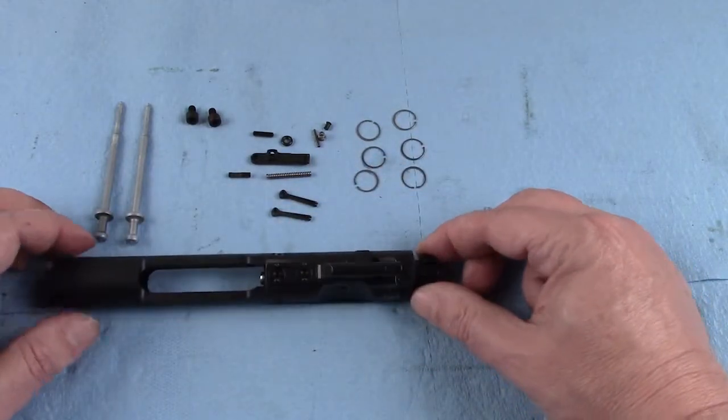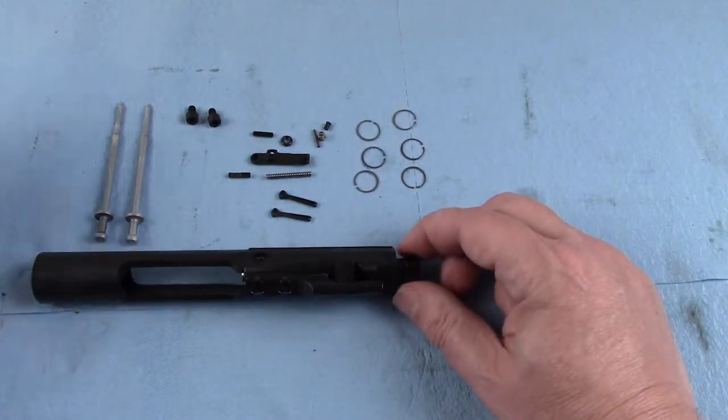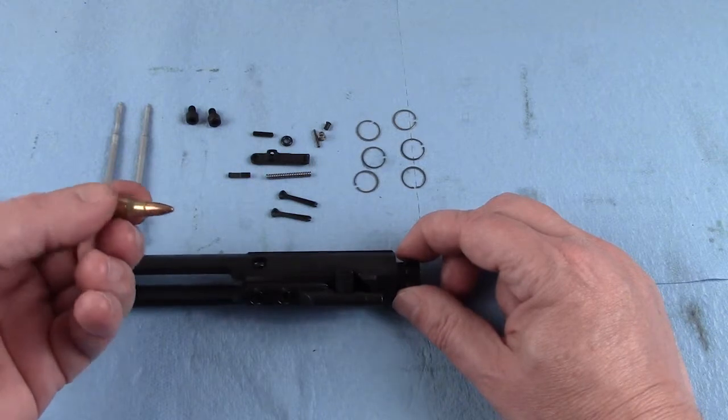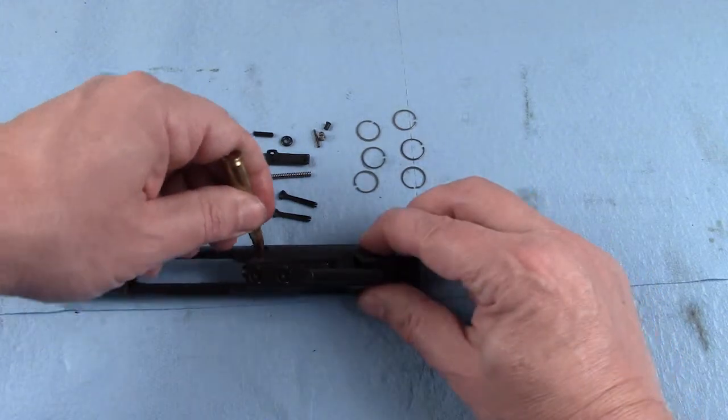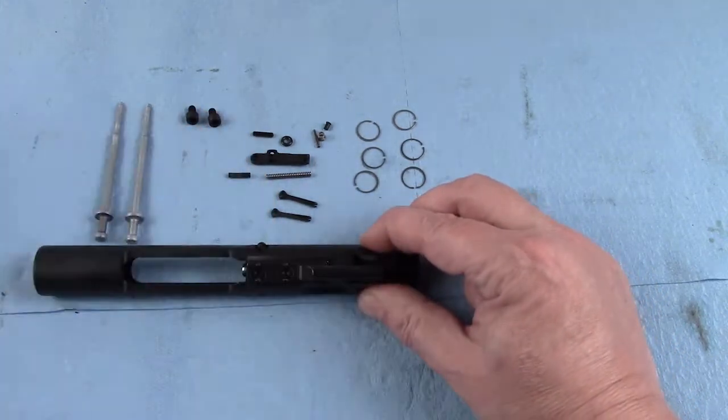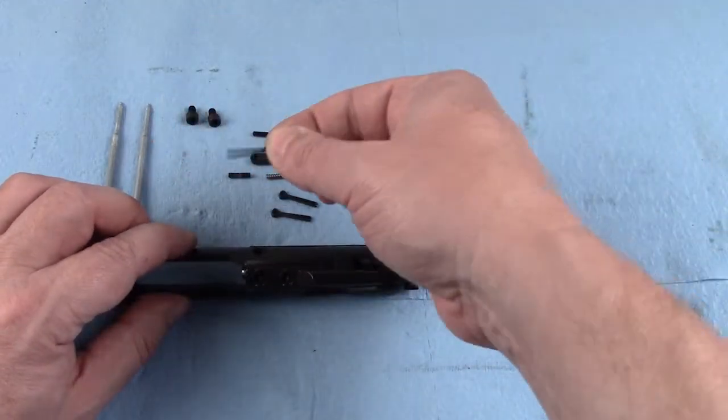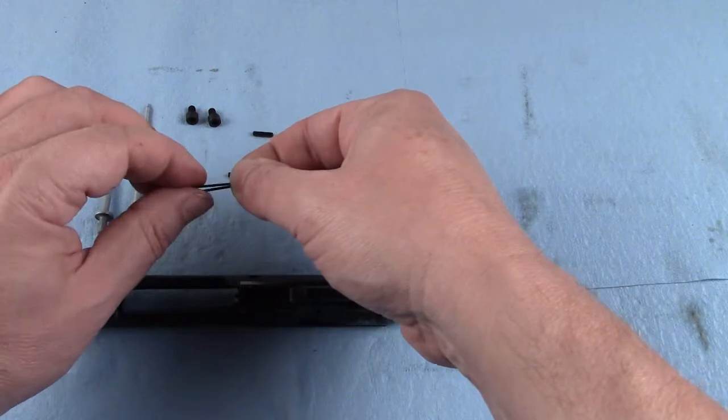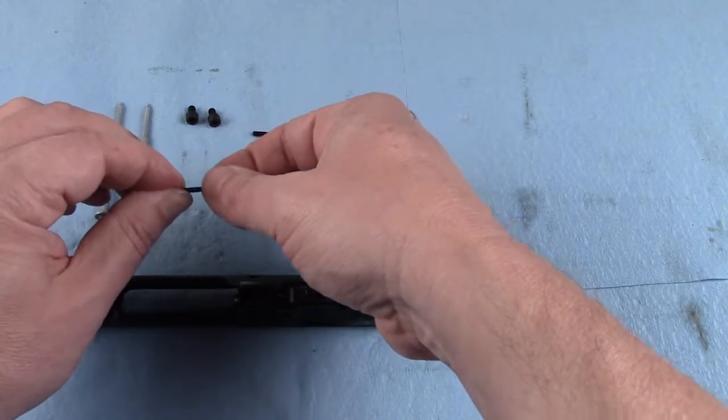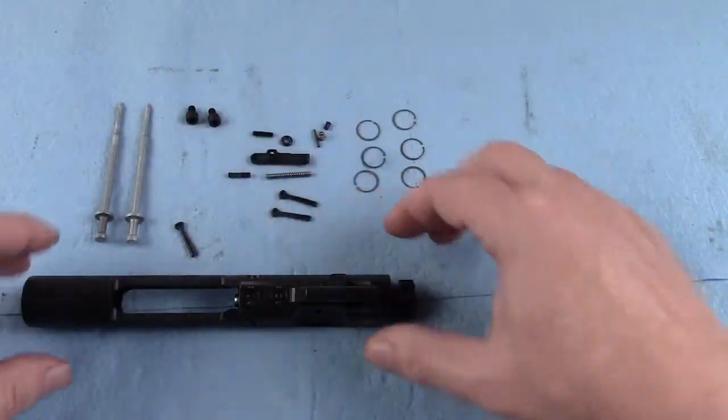How do you disassemble this? First of all, this was designed to be disassembled with a tip of a 223-556 round. First thing I'm going to do is I'm going to pull out this cotter and make sure that you never do anything to this. You don't spread these things out. You don't tweak them at all.